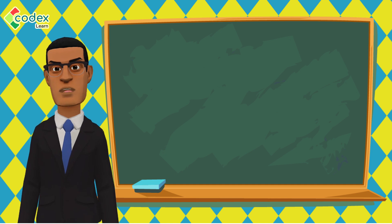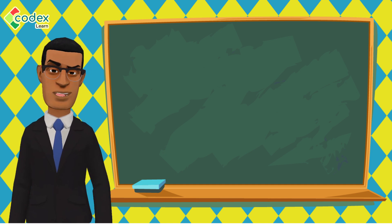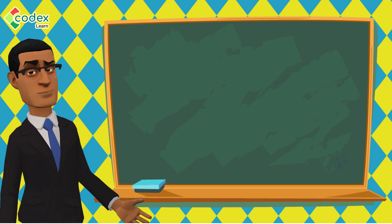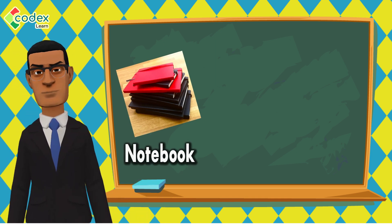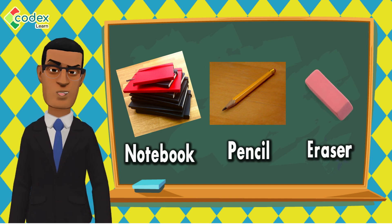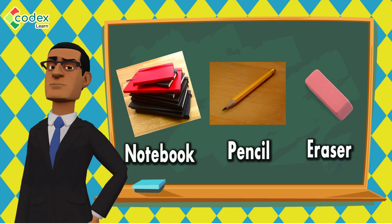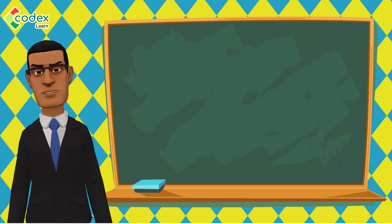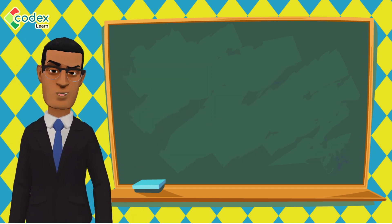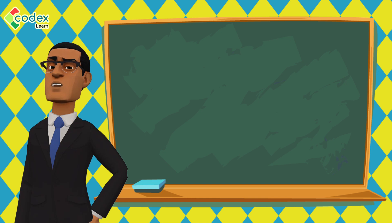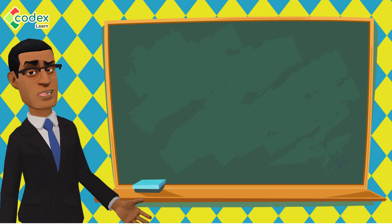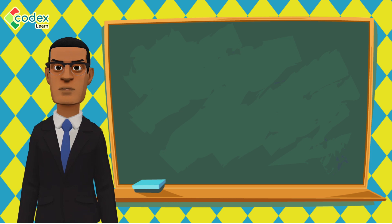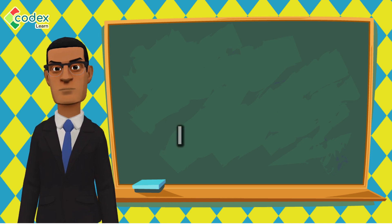Now let us play a game where we all get to be environmental scientists. We shall explore the school environment and find five things that are around us. You will need a notebook, pencil, and eraser for this activity. We are going to use our five senses. As you explore, please write down the name of anything you find in the school environment and make sentences with them.